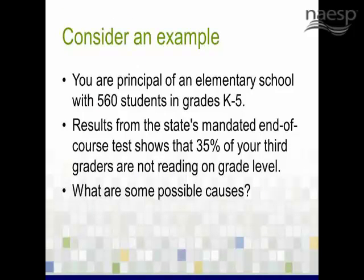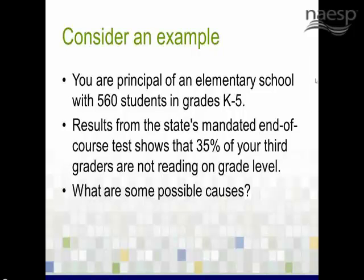I'm going to pose an example and pause for a few moments for your input. Suppose you're the principal of an elementary school with 560 students in grades K through 5. You've just received results from the state's mandated end-of-course test showing that 35% of your third graders are not reading on grade level. What are some possible causes? Maybe ELL students, demographics, specialized populations, curriculum alignment — what's being taught doesn't match what's measured on the test — quality of instruction, student fluency, attendance, and quality of assessment. You guys are doing very well.